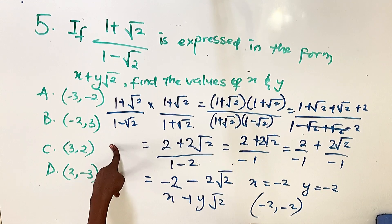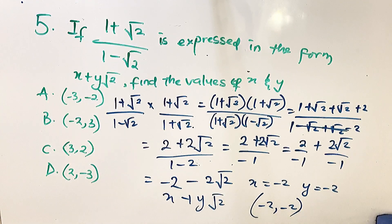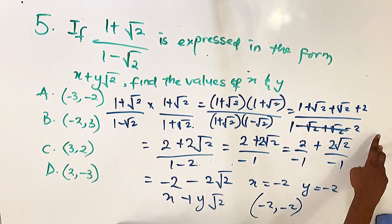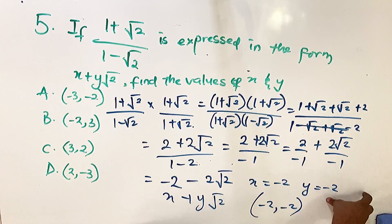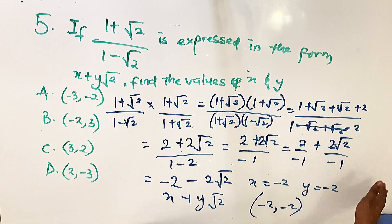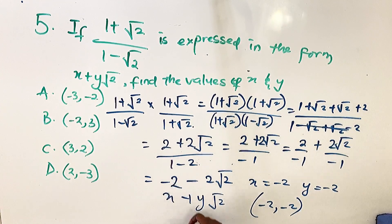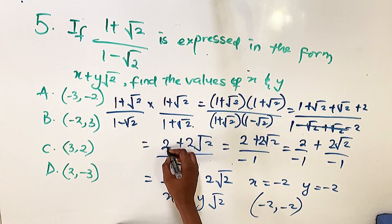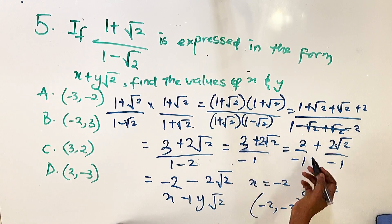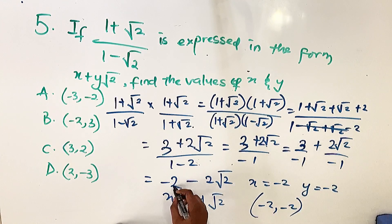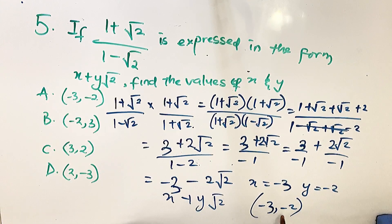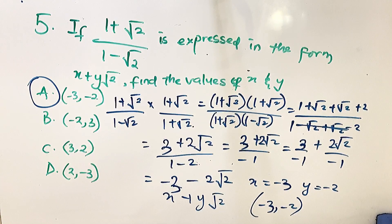I want to point out that I made an error earlier — I calculated 1 plus 2 as 2 instead of 3. I'm leaving this in the video because people make mistakes, and it's important to always go back and check. After the correction: 3 divided by minus 1 gives minus 3, so x equals minus 3 and y equals minus 2. The answer is option A. That's all for this video, see you in the next one!